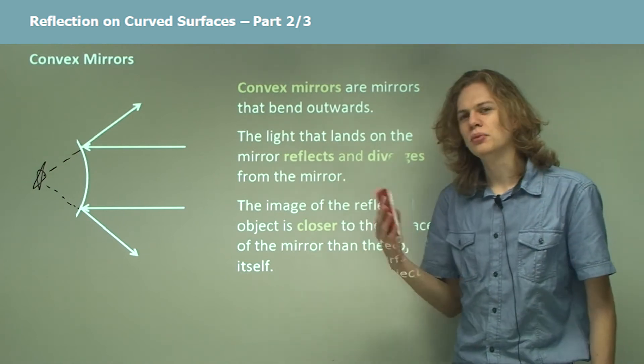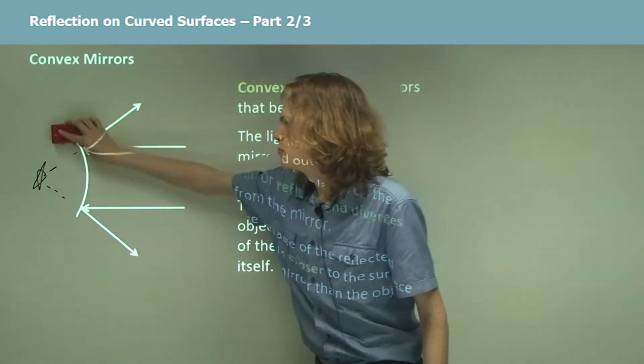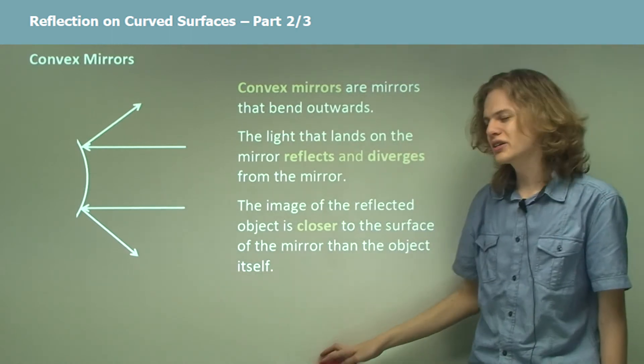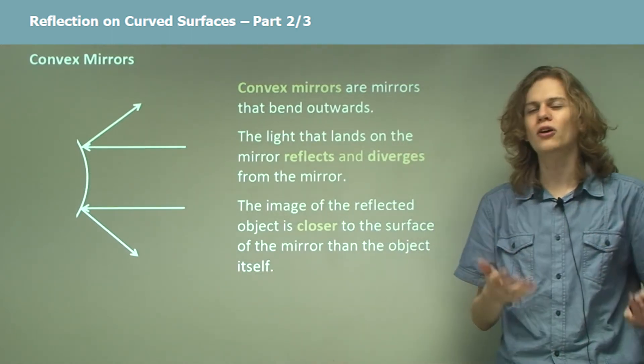This has interesting implications for depth perception when we look into convex mirrors. It means that it can be hard to tell just how far away an object is.